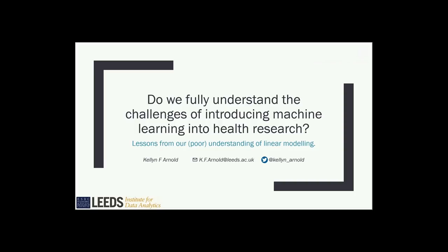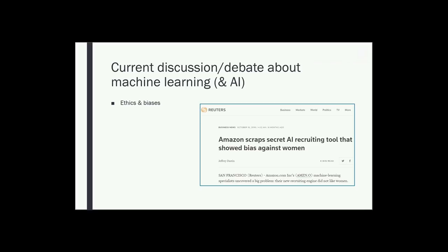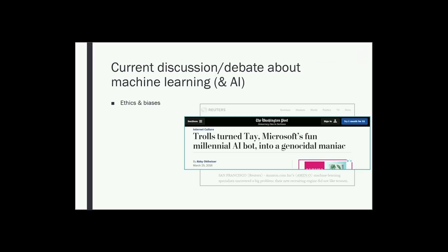There seem to be a growing number of people starting to raise red flags about the use of machine learning and artificial intelligence in health research. For example, there's quite a lot of discussion about the ethics and biases of machine learning algorithms and the implicit biases that might be programmed into them. You might have heard about an algorithm developed by Amazon recently that ended up being biased against women, or the bot developed by Microsoft that was turned into a genocidal maniac after spending just 24 hours on Twitter.